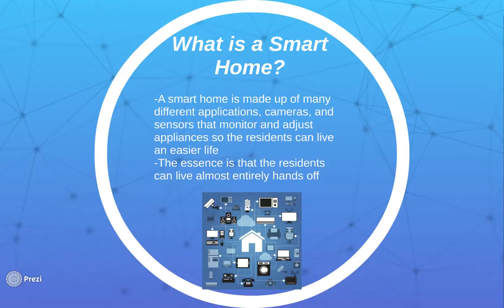So what is a smart home exactly? There are a few types. The bigger smart home is many different appliances and technologies that are interconnected in a home that sense data and alter the surroundings in the home to make life easier for the user.